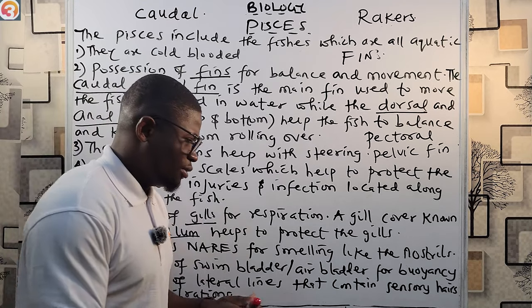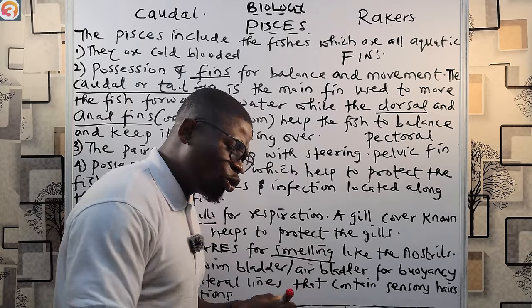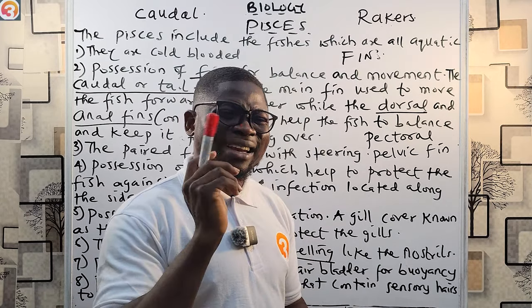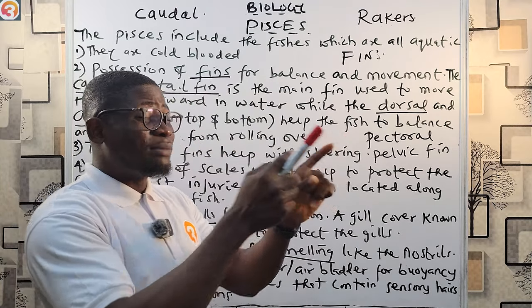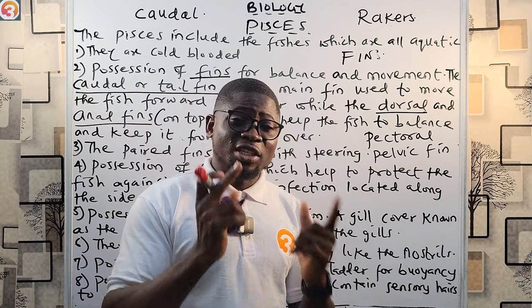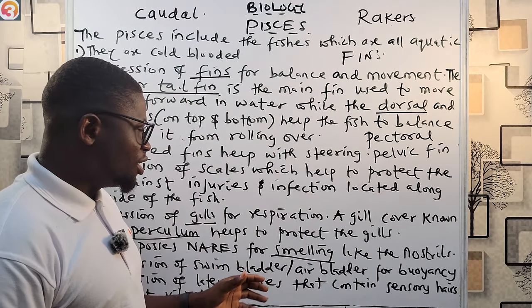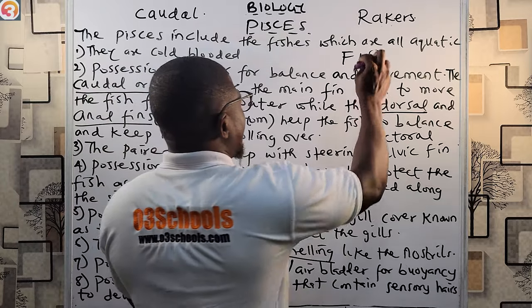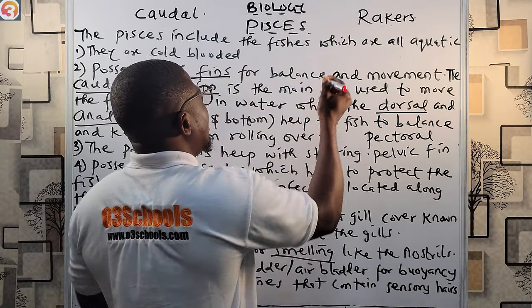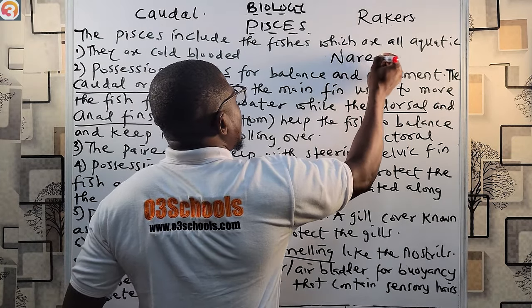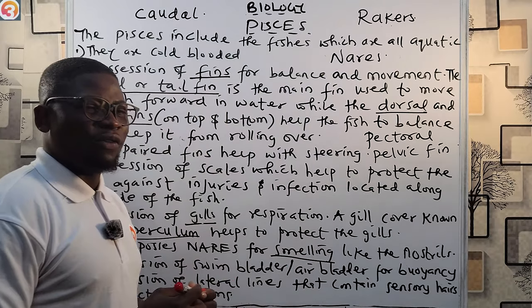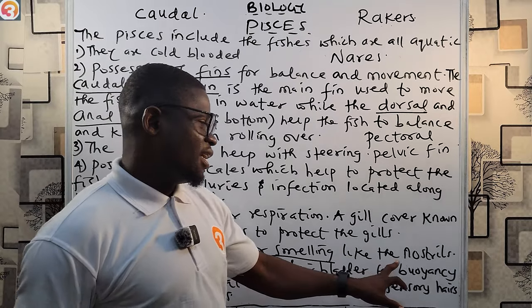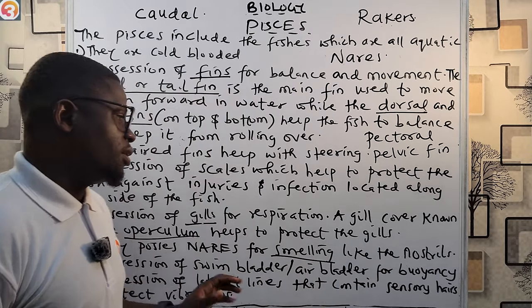Number six: fishes possess nares — N-A-R-E-S — for smelling, just like the way we have nostrils for smelling.